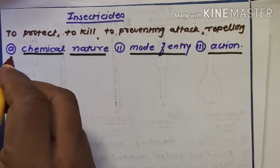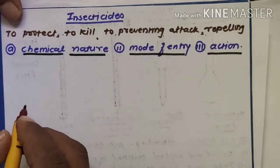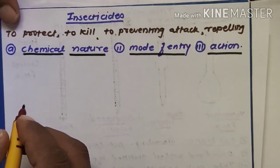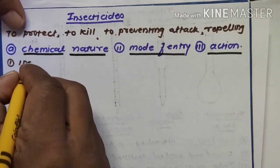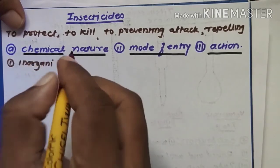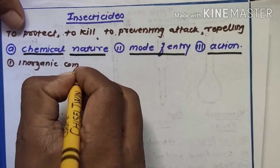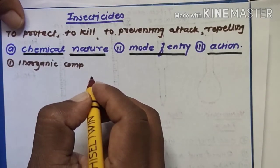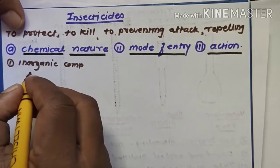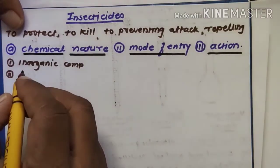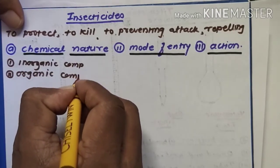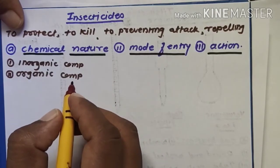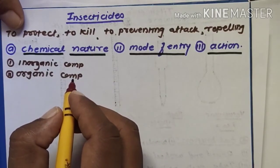According to chemical nature, the first subclass is inorganic compounds — for example, arsenicals and fluorine compounds. The second subclass is organic compounds — for example, DDT, HCH, phenyl derivatives, carbamates, etc.